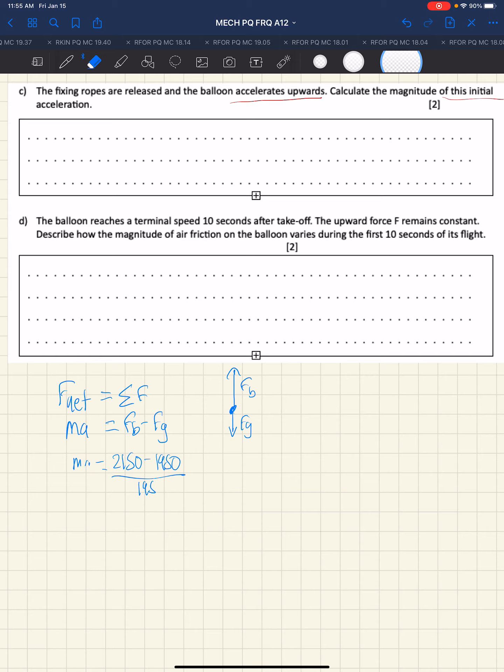Acceleration then is 2150 minus 1950 over 195, which is 200 over 195, and that works out to be 1.03 meters per second squared is the acceleration.